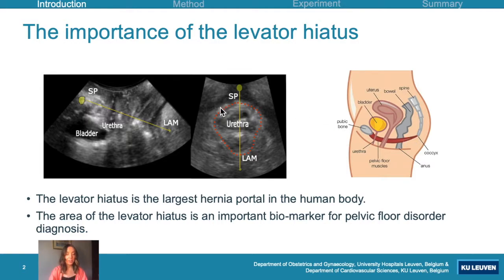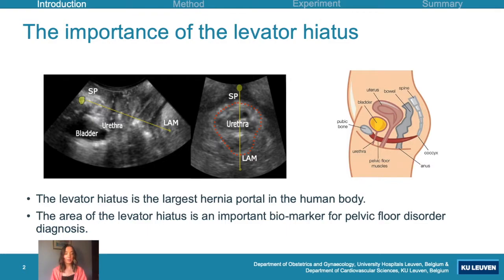The levator hiatus, shown as the red dotted line, is very important and is a biomarker used to diagnose pelvic floor disorder. Identifying this plane is all done manually; clinicians manipulate a volume using 4DVU software from GE.